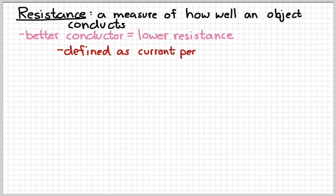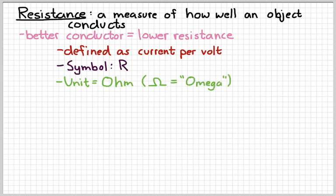The way that we define resistance is the current per volt needed to make it move. We give it the symbol R. And then the unit that we use to measure resistance is called the ohm, named after a dude named ohm. The symbol is kind of like a beat up horseshoe. That's actually the Greek letter omega. And so you may see that on devices like stereo speakers. It's a measure of current per volt.